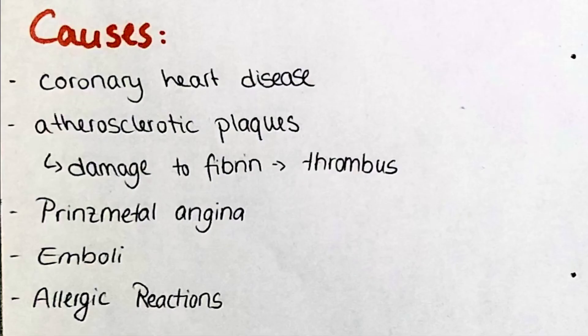There is a variety of causes which can impair the blood supply of the heart muscle tissue. The most common is the partial or complete occlusion of the coronary arteries due to atherosclerosis. Other causes include Prinzmetal angina, a spontaneous vasospasm narrowing the lumen of the coronary arteries, emboli, or also allergic reactions.